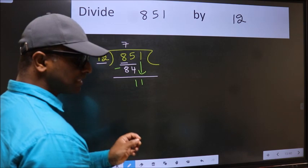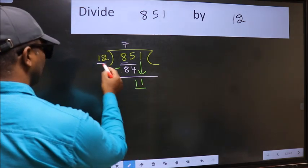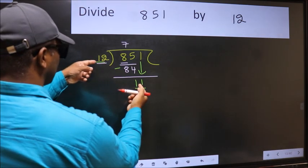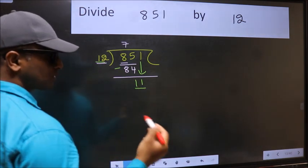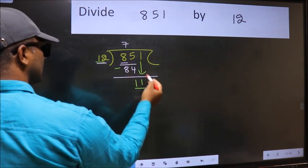And the mistake is this: here we have 11 and here 12. 11 is smaller than 12, so what many do is they directly put a dot and take 0, which is wrong.